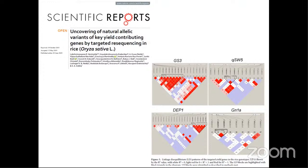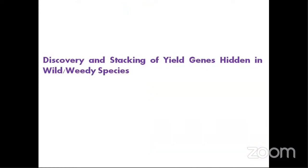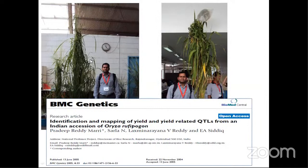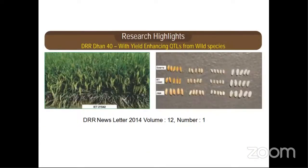We also identified important alleles for grain size characters and yield genes like GS3, GW5, DEF1, and GN1A — many superior and novel alleles exist in Indian germplasm that we haven't yet fully utilized for enhancing yield. For discovery and stacking of yield genes: wild and weedy species have yield-enhancing genes, as proved by researchers including Professor Siddiq in India. We confirmed that wild species Oryza rufipogon, O. nivara, and O. punctata harbor yield-enhancing genes. Dr. Sarla continued this work and developed DRR Dhan 40, a remarkable achievement from wild species O. rufipogon.